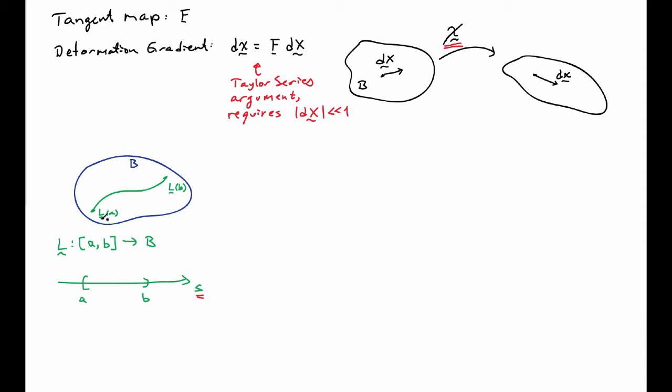Here I have L evaluated at little a, the first endpoint of the interval, and L evaluated at B, the second endpoint. In between, we get a continuous differentiable curve.